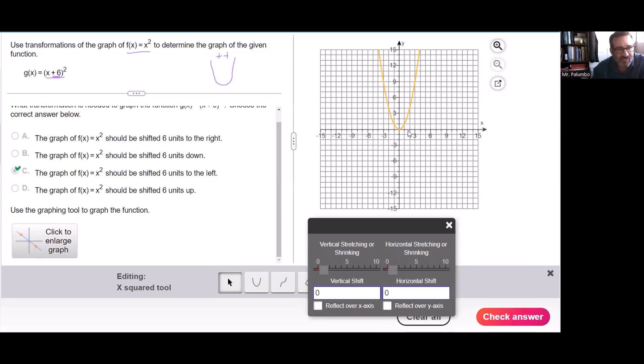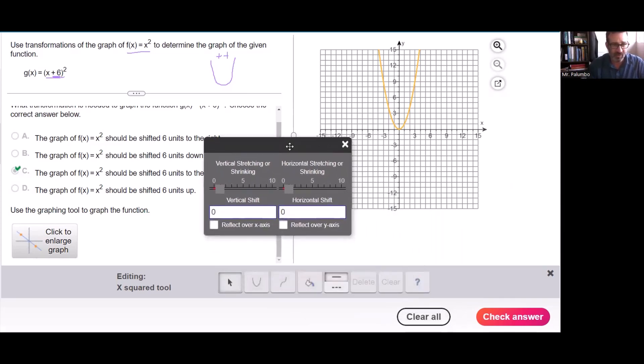And now since I'm shifting it six units to the left, that's going to be a horizontal shift. And I want to go in this little box. It pops up a dialog box. And I need to put a negative six. That's going to go to the left. As soon as I click out of that box, you'll see the graph change. There it is. And that's my answer.